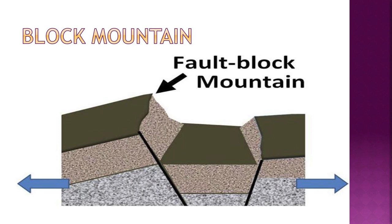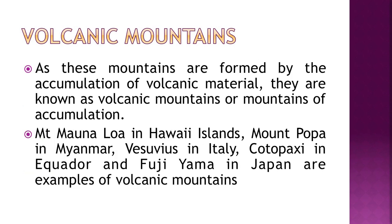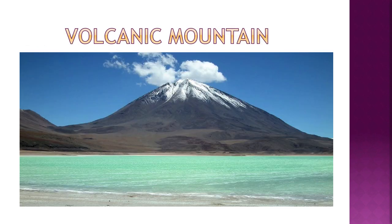Volcanic mountains form when high temperatures deep inside the earth turn rock into molten magma. During volcanic eruptions, this molten material is ejected to the earth's surface and accumulates around the vent, taking the form of a cone. The height increases with each eruption, forming a volcanic mountain. Mount Mauna Loa in Hawaii, Mount Popa in Myanmar, Vesuvius in Italy, Cotopaxi in Ecuador, and Fujiyama in Japan are examples.